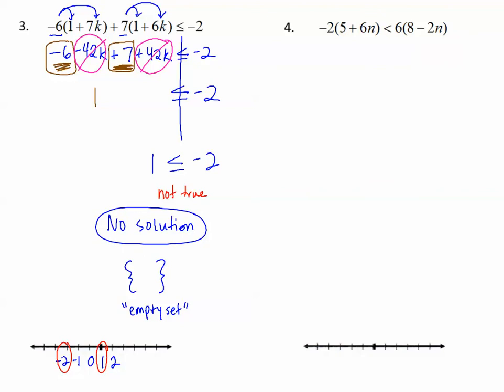Let's try number 4. Draw our line. And let's begin by distributing the negative 2 to the quantity 5 plus 6n and the 6 to the quantity 8 minus 2n. Negative 2 times 5 is negative 10. Negative 2 times 6n, negative 12n. 6 times 8 is 48. And 6 times negative 2n is negative 12n. We'll put our less than symbol in the middle. I don't have like terms to combine on this side or like terms to combine on this side. So let's begin by getting our n's together. Negative 12n and negative 12n on both sides. The inverse of subtracting is adding.